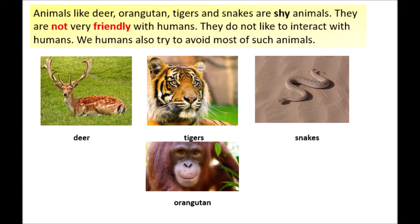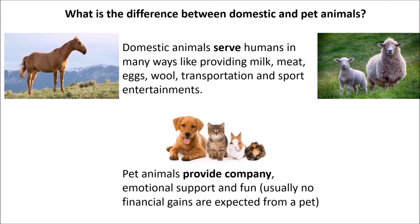What is the difference between domestic and pet animals? Domestic animals serve humans in many ways like providing milk, meat, eggs, wool, transportation, and sports entertainment. Pet animals provide company, emotional support, and fun. Usually, no financial gains are expected from a pet.